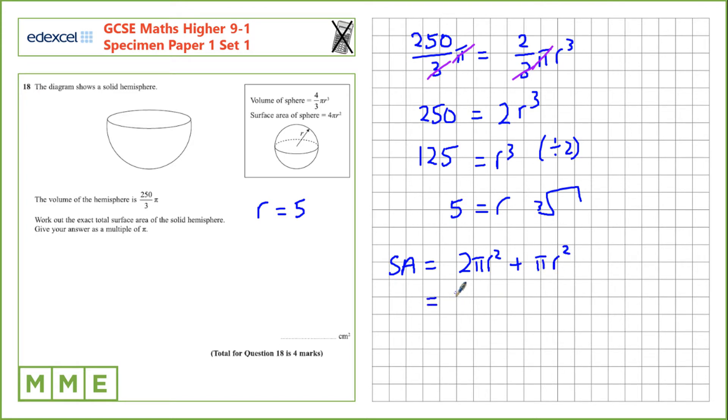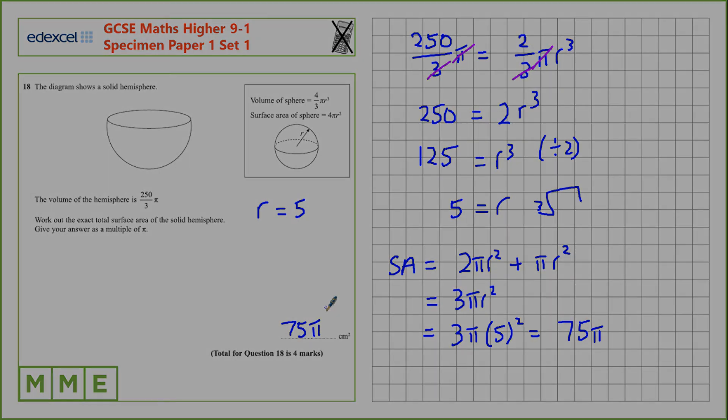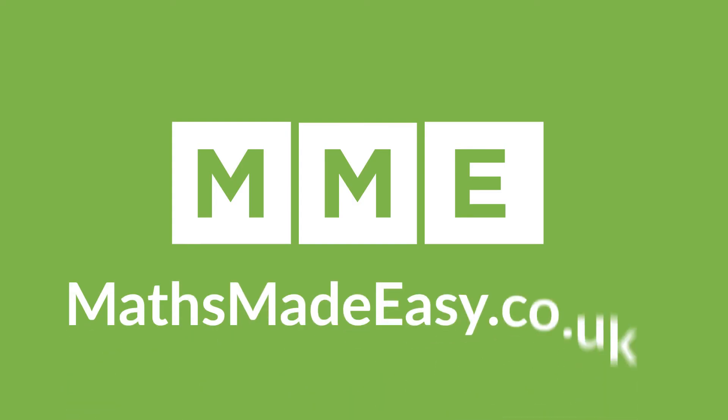So that's 3 pi r squared in total. And we'll substitute r for the radius that we worked out. That's 3 pi times 5 squared, which equals 75 pi. We've been told to give our answer as a multiple of pi, so we'll leave it at that.